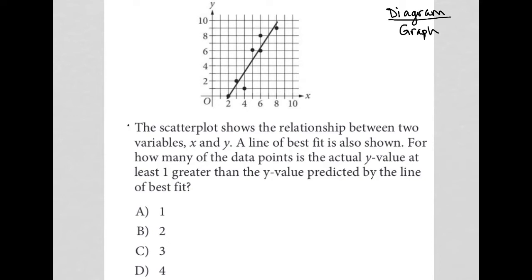Let's read the question and see exactly what we need to figure out. The question says, the scatter plot shows the relationship between two variables, X and Y. A line of best fit is also shown. For how many of the data points is the actual Y value at least one greater than the Y value predicted by the line of best fit?